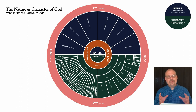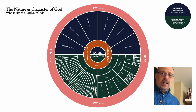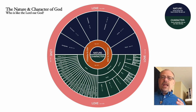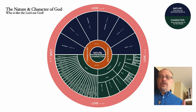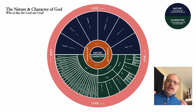Surrounding the outside of the chart is the reality of God's love, which encompasses all that God is. It is the only way that we can truly understand all that flows out of God — all the other aspects of his character.